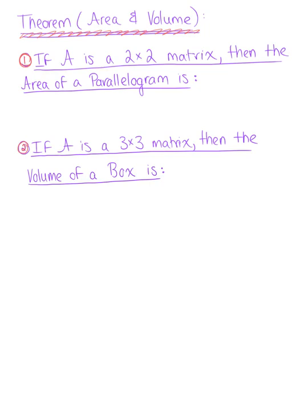In this theorem, we are showing how we can find the area of a parallelogram and the volume of a box using the determinant. The first part: if A is a 2 by 2 matrix, then the area of the parallelogram is defined by the absolute value of the determinant of matrix A. Case 2: if A is a 3 by 3 matrix, then the volume of a box, or parallelepiped, is again defined by the determinant of matrix A.